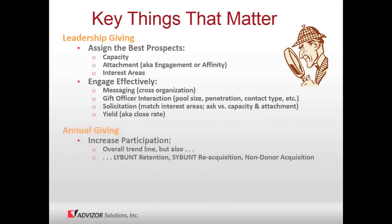On the annual giving side, you want to see increased participation. The overall trend line breaks into three sub-problems: retaining current donors, reacquiring lapsed donors, and acquiring non-donors. We've seen examples where an organization does an awesome job retaining current donors but a really bad job bringing people back once they leave or acquiring new people — making growth very hard.